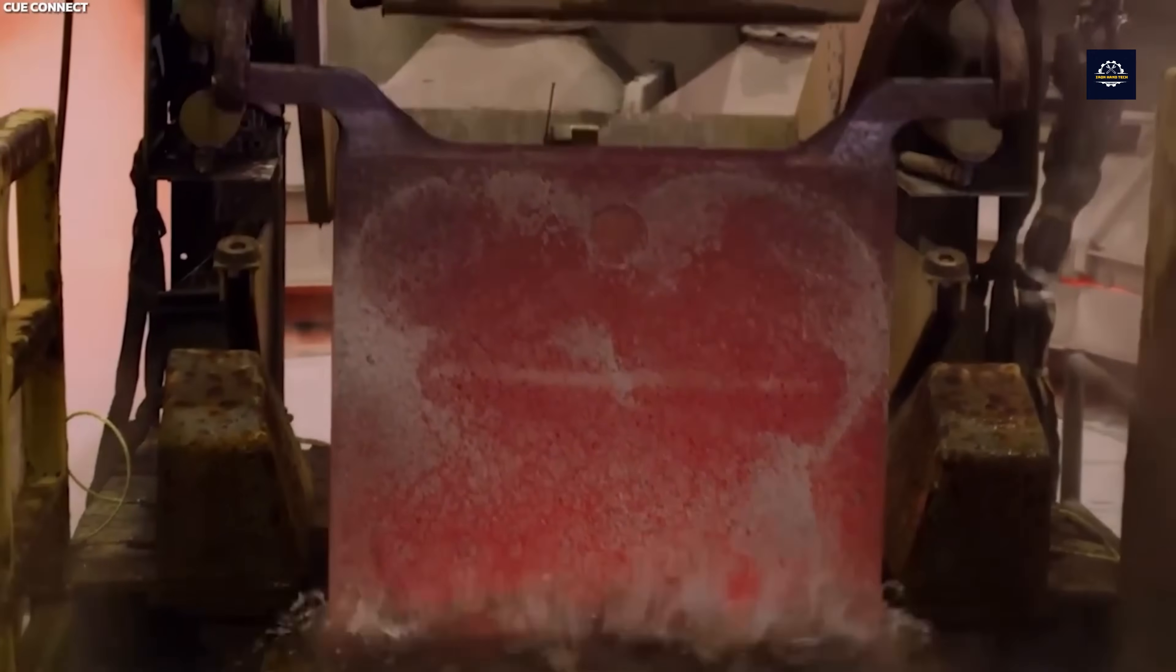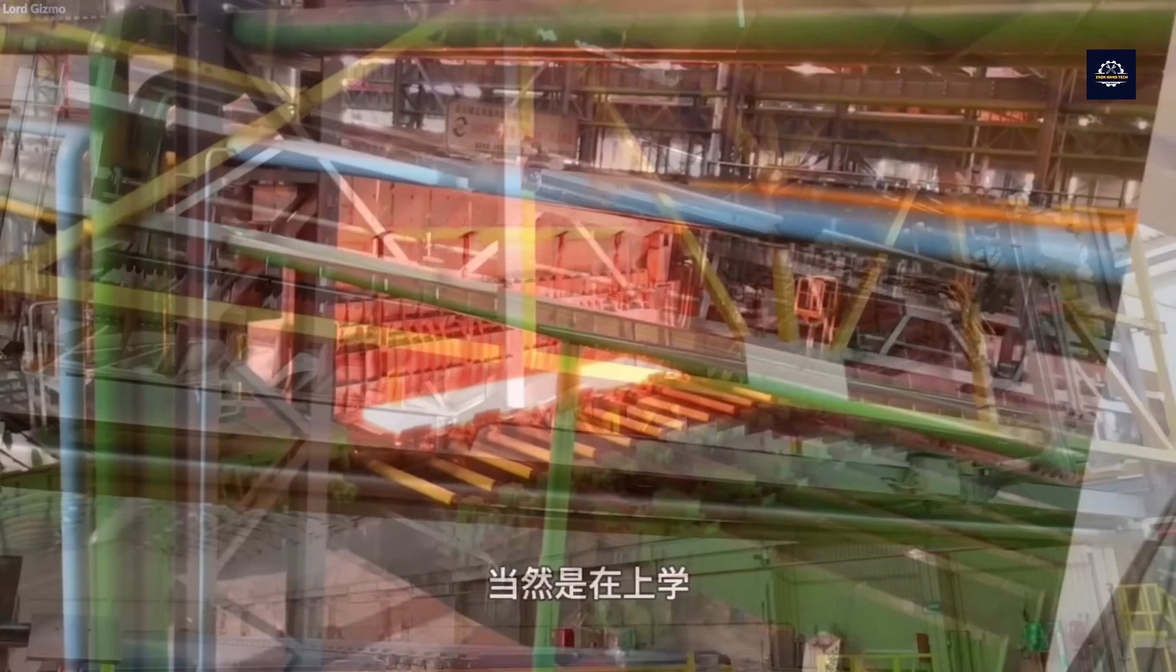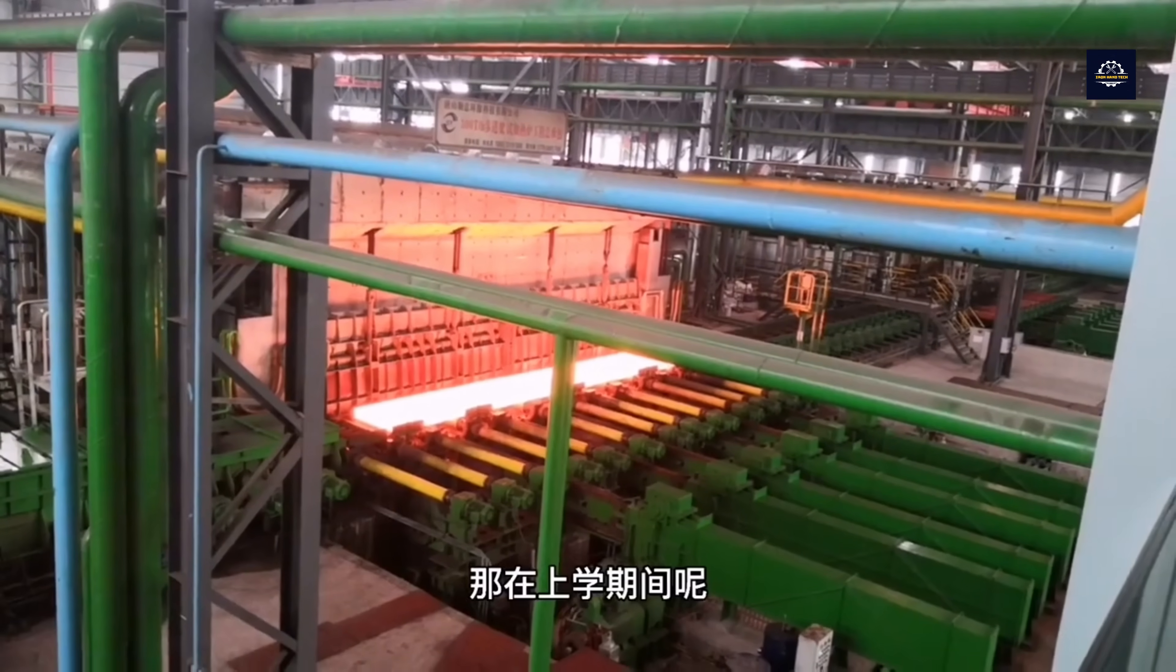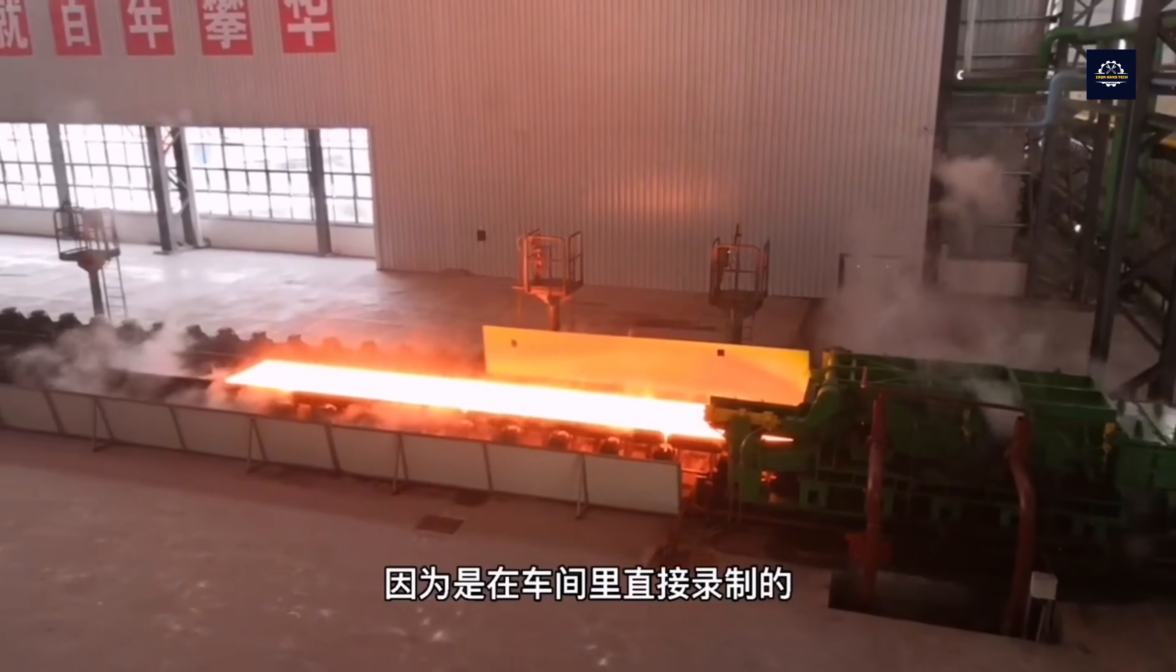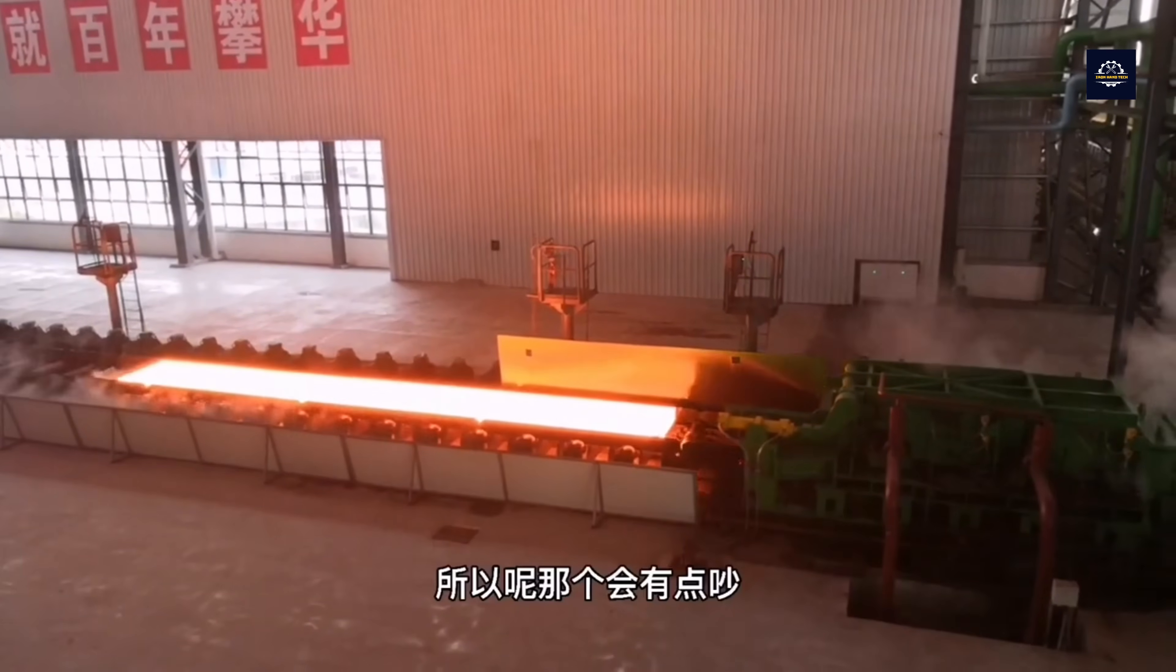The rolling process begins with hot rolling. Copper ingots are passed through hot rolling mills to thin them down and reduce their size. Hot rolling reduces the thickness of the copper without losing its mechanical properties.